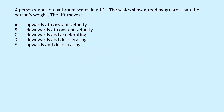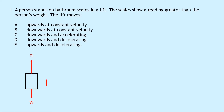Question one says that a person stands on bathroom scales in a lift, and the scales show a reading greater than the person's weight. The options are: A) upwards at constant velocity, B) downwards at constant velocity, C) downwards and accelerating, D) downwards and decelerating, E) upwards and decelerating. Drawing a free body diagram, we have a reaction force upwards and weight downwards, with the reaction force drawn bigger than the weight, since the scales read greater than the person's weight. The unbalanced force F is therefore upwards.